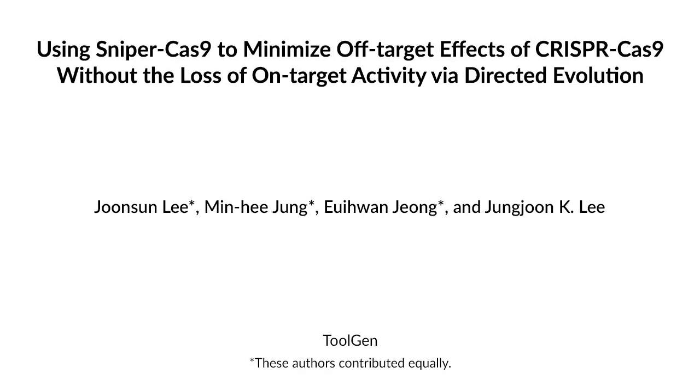In nature, Cas9 is an immune protein against invading viruses. Evolution prefers Cas9 with promiscuous specificity, which can cleave viral DNA with spontaneous mutations.